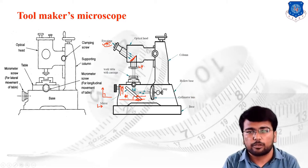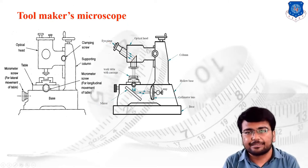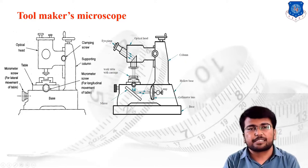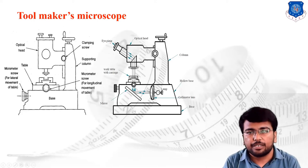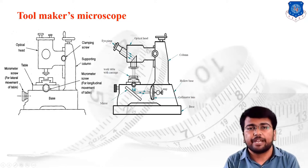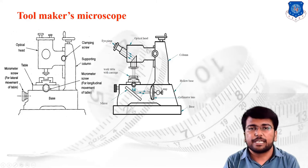In this setup three different lenses are used: a collimating lens, the eyepiece, and the objective lens. The lamp intensity can be changed by providing a variable control, allowing us to obtain a highly magnified image of the screw thread profile. We can compare this profile with reference standard profiles to check the error or deviation of the manufactured part from the standard, thereby identifying errors generated in the manufacturing process.